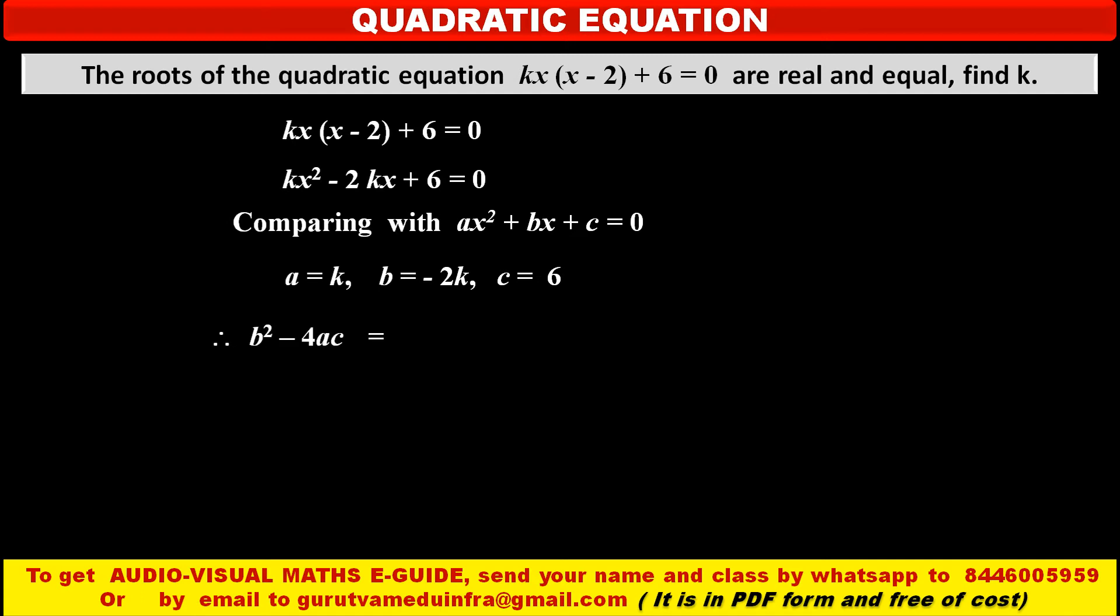Therefore, discriminant of this quadratic equation, b square minus 4ac is equal to, in bracket minus 2k bracket square, it is value of b square, minus 4ac, that is minus 4 into value of a, that is k here, into value of c, that is 6. Now solving this, we get 4k square minus 24k.